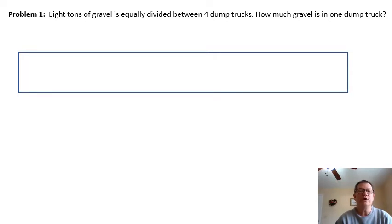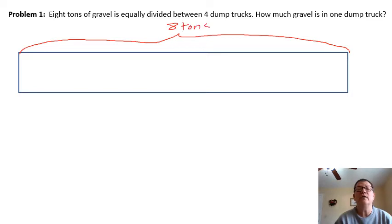As I go through these problems, if you want to pause it first and try it on your own and then check to see if you got your answer, it'd be a pretty good way. First, let's take a look here. Eight tons of gravel is equally divided between four dump trucks. How much gravel is in one dump truck? We're going to do a tape diagram. The top is always the total, and this becomes eight tons of gravel. There's four dump trucks, so I'm going to split it into four. Each one of these represents one dump truck.